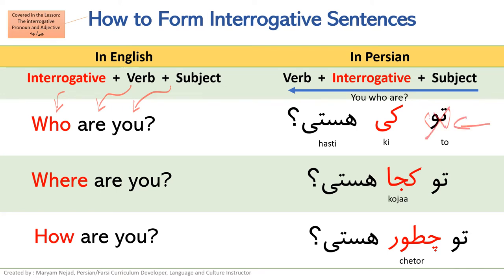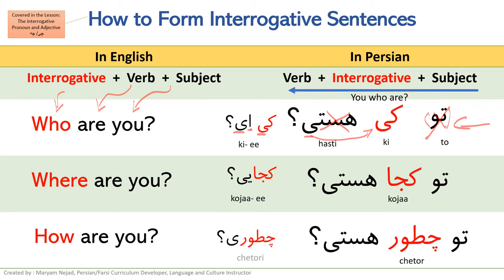In colloquial Persian we drop the subject pronoun 'to' and the present stem, and the verbal ending joins the interrogative. So 'to key hasti' becomes 'key' — we add an aleph before the verbal ending because 'key' ends in the letter 'ye'. 'To koja hasti' becomes 'koja'. And 'to chatur hasti' becomes 'chaturi' — you may have heard 'chaturi' before as it's a very common greeting term.